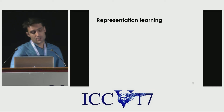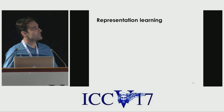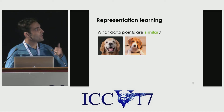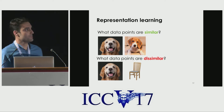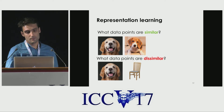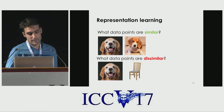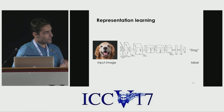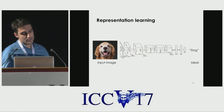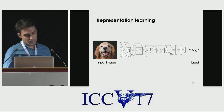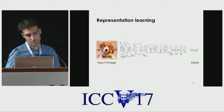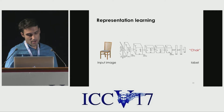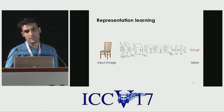One way to do this is to answer the following questions during training: what data points are similar, and what data points are dissimilar? In a supervised setting, we answer these questions using labels. We tell the network: this is a dog, and it's similar to this because this is also a dog, and it's dissimilar to this because the labels differ.